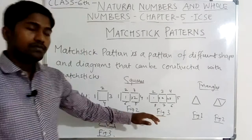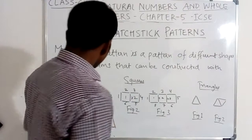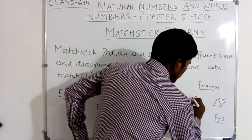Now let's come to the triangle shapes — patterns of triangle shapes. In figure 1, there is one triangle. How many mastic is used? One, two, three. Three numbers of mastic are used.